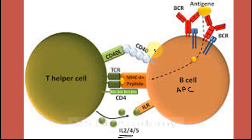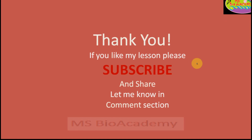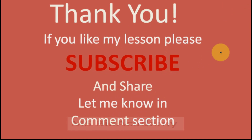These interleukins are released by the T helper cells and are recognized by the B cells, which activates them to release antibodies against the particular pathogen and generate an immune response. This is how the whole process of antigen processing and presentation by MHC class 2 molecules takes place. Thank you — if you like this lesson, please subscribe to MS Bio Academy and share with your friends.